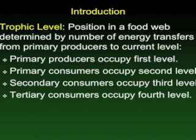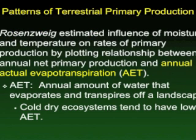This can go on, and usually a terrestrial ecosystem has fewer levels than an aquatic ecosystem. When we think about the patterns of terrestrial primary production, one of the things that pops out right away is that the more moisture there is and the warmer it is, the more production there's going to be.